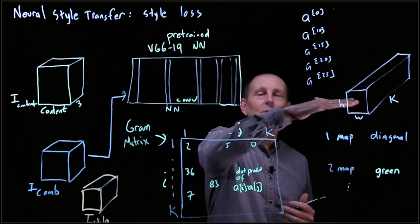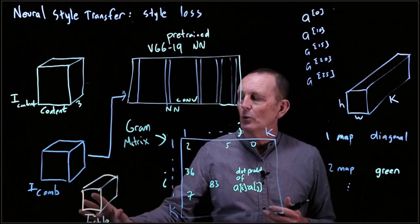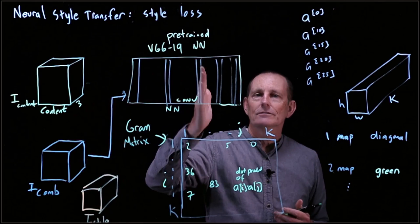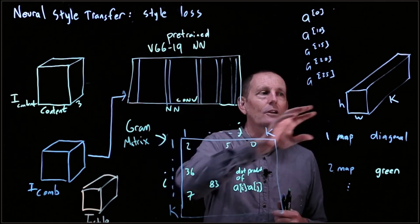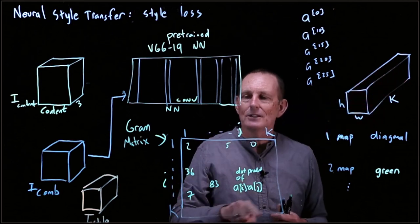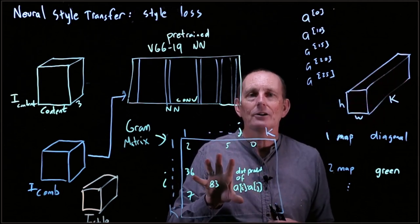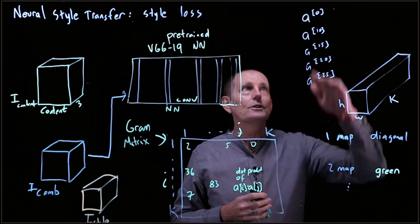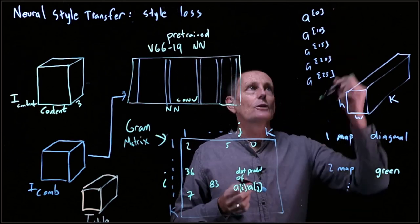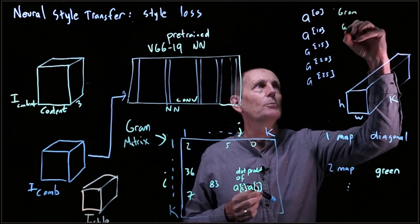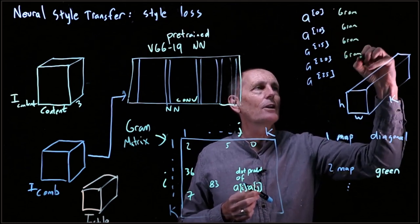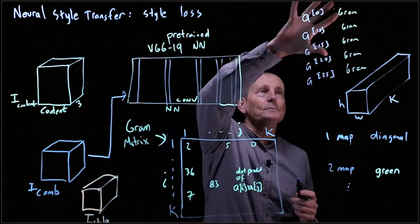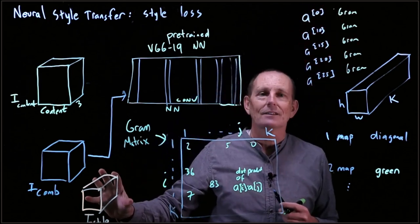This Gram matrix is computed for a particular layer. When we feed in the style image, it produces a specific output at that convolutional layer; we compute the Gram matrix of that output, and that becomes our summary of the style at that layer. We do this for all chosen layers, computing a Gram matrix for each. That collection of Gram matrices is our full understanding of what the style image's style is.